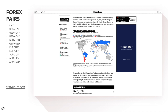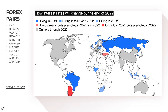Bloomberg has a central bank outlook showing how interest rates would change by end of 2022. Hiking rates generally has a positive effect on a currency, and the expectation of hiking is like a 'buy the rumor, sell the fact' scenario. If you expect one central bank to hike sooner than another that's lagging behind, the idea is to buy the currency whose central bank is hiking first and sell the one that's lagging.